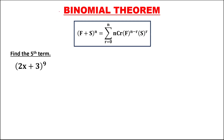For this binomial theorem, and using this formula, to solve for this problem: find the fifth term from the expansion of this binomial. Since the exponent is 9, there are 10 terms from the expansion of this binomial.